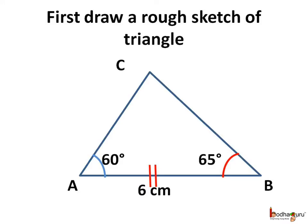Now, how do we draw a triangle when the measurements of two angles and the length of one side are given? First, we draw a rough sketch of the triangle we want to draw. The one side given is 6 cm, and the two angles are 60 degrees and 65 degrees. We take 6 cm as the base of the triangle, with angle A as 60 degrees and angle B as 65 degrees.